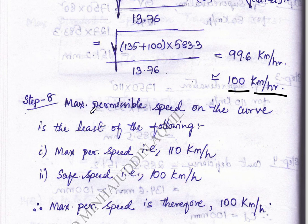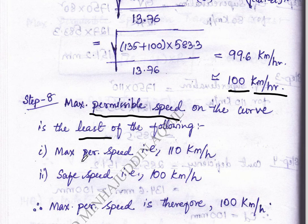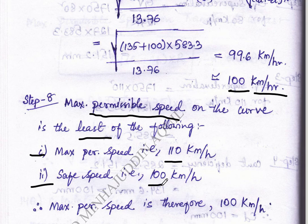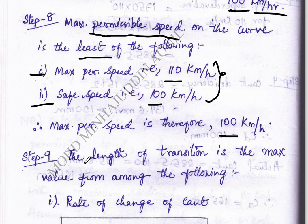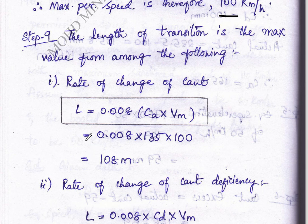Step eight: calculate maximum permissible speed. It is the least of the following conditions: first, maximum sanctioned speed given as 110 km/h; second, safe speed calculated as 100 km/h. The least value between these two is 100 km/h, so we take 100 km/h as the maximum permissible speed.